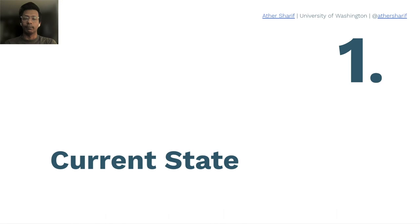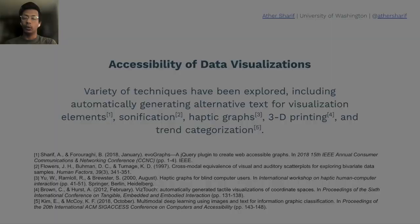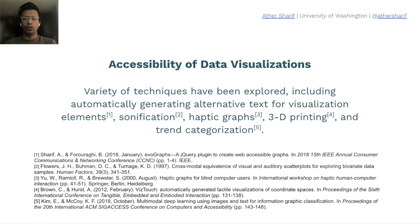Now let's discuss the current state of the accessibility of online data visualizations. Prior work has made plausible contributions in making online data visualizations accessible to screen reader users by automatically generating alternative text, sonified versions of the graph — otherwise known as audiographs — haptic graphs, 3D printing, and trend categorization.